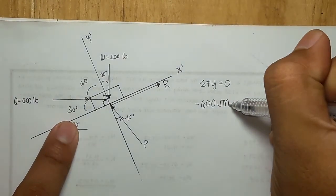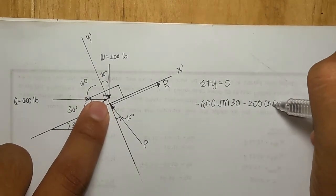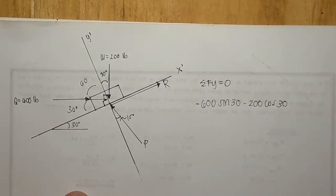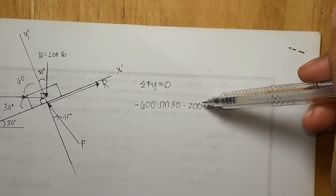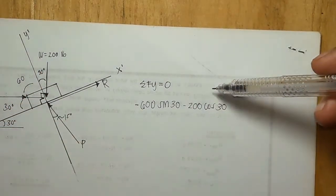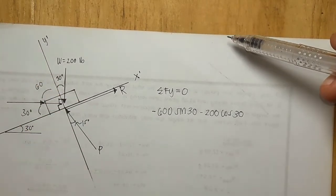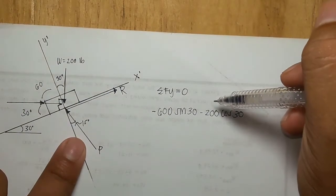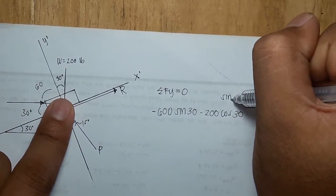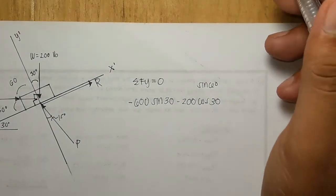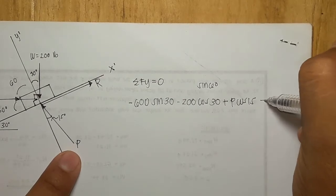So 600 sine 30 minus 200 cosine of 30. Why we are using the cosine for the 200 is because our angle is attached or is from the y-axis to the force. If we are using the angle from force to the x-axis, we can change it to sine 60. Then we have plus P cosine of 15 equals zero.